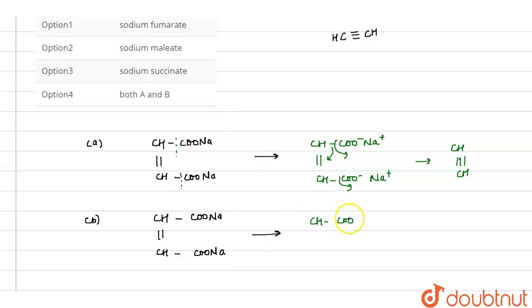And double bond CH COO⁻ Na⁺. So when electricity is passed through, if these bonds shift here and these get changed into CH triple bond CH. Okay? Next thing is sodium succinate.